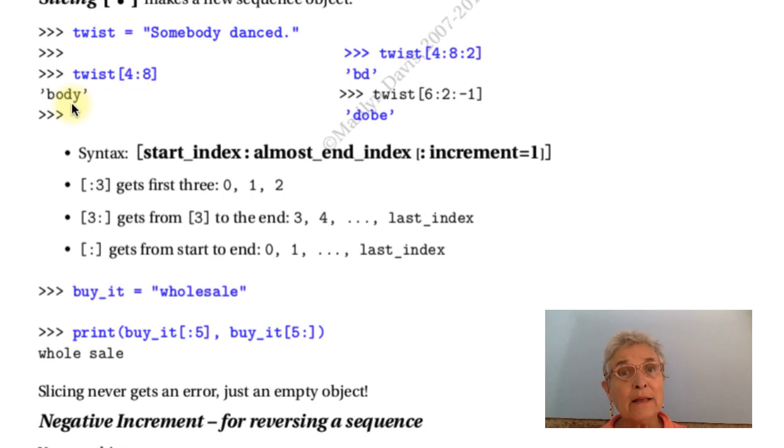You can add another colon and a step size or an increment size. And that way we only got the fourth and the sixth index is coming out. That step size can be negative, and we'll see a good use for that right away. So that starts at six, never gets to the two.